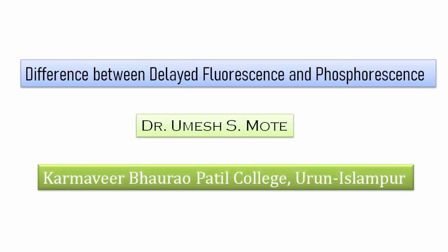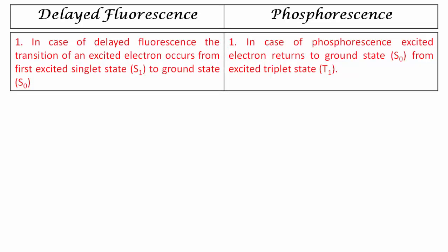Dear students, in this video we are discussing some points of distinction between delayed fluorescence and phosphorescence. In case of delayed fluorescence, the transition of an excited electron occurs from the first excited singlet state S1 to the ground state S0. When this transition takes place and light radiation is emitted, that emitted light radiation is called delayed fluorescence.